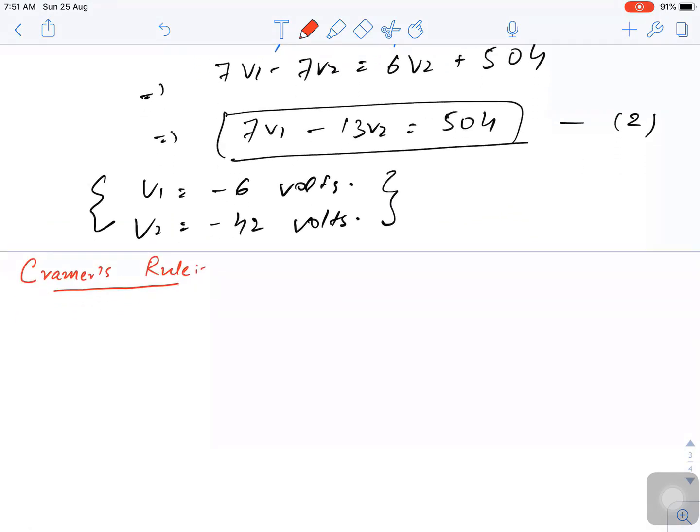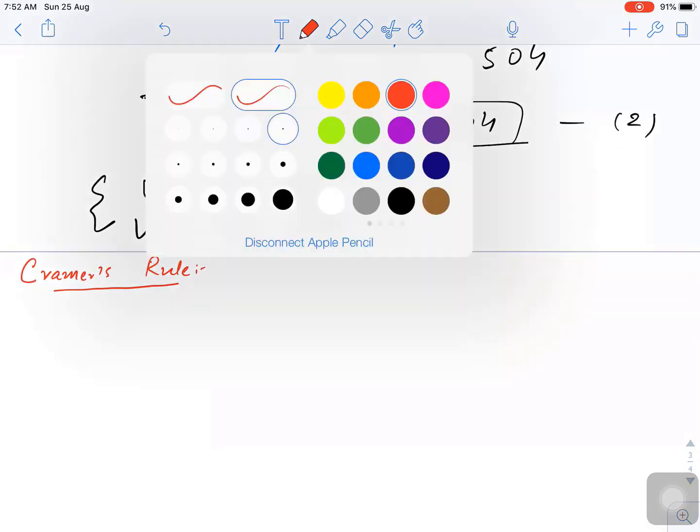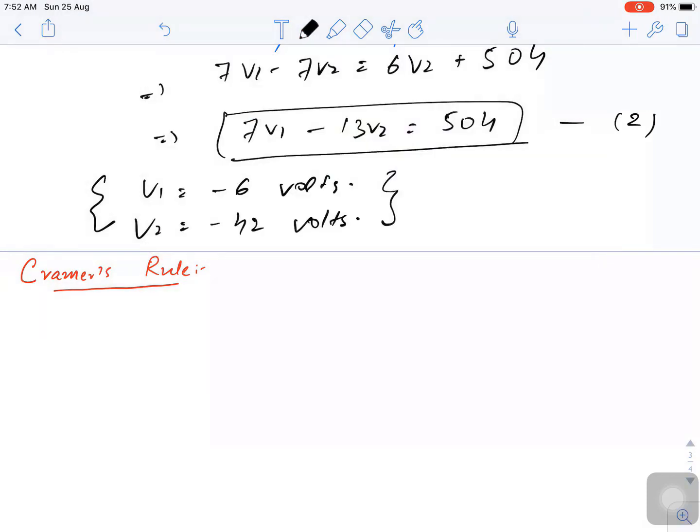According to this rule, what we have to create first is delta. Delta is basically formed by the coefficients of V1 and V2.